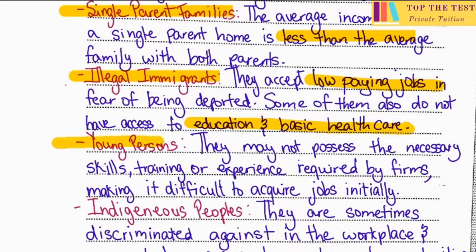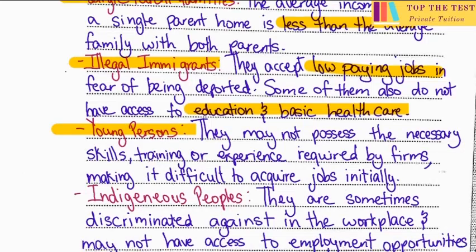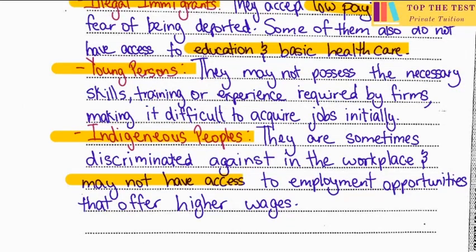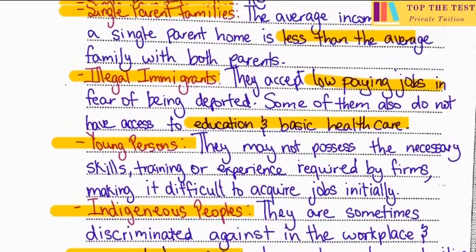Then we have young persons — they may not possess the necessary skills, training, or experience required by firms, which makes it difficult for them to acquire a job in the first place. The last category is indigenous peoples, who are sometimes discriminated against in the workplace and may not have access to employment opportunities that offer higher wages.